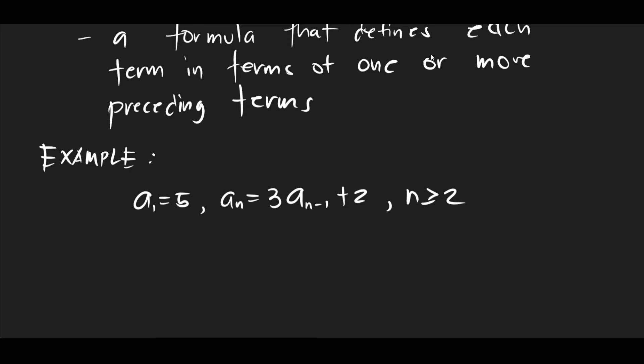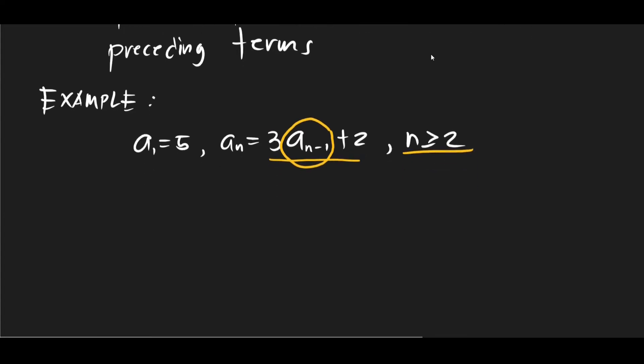As you can see, the an, let's take a look at the composition of an. We have here 3 times a(n-1) plus 2. Now this is the thing that we should be very vigilant about, so a(n-1). And you can also see the restriction here, n is greater than or equal to 2. Okay, so how can we find, let's say for example, the first three terms of this sequence? Okay, let's try to answer it.